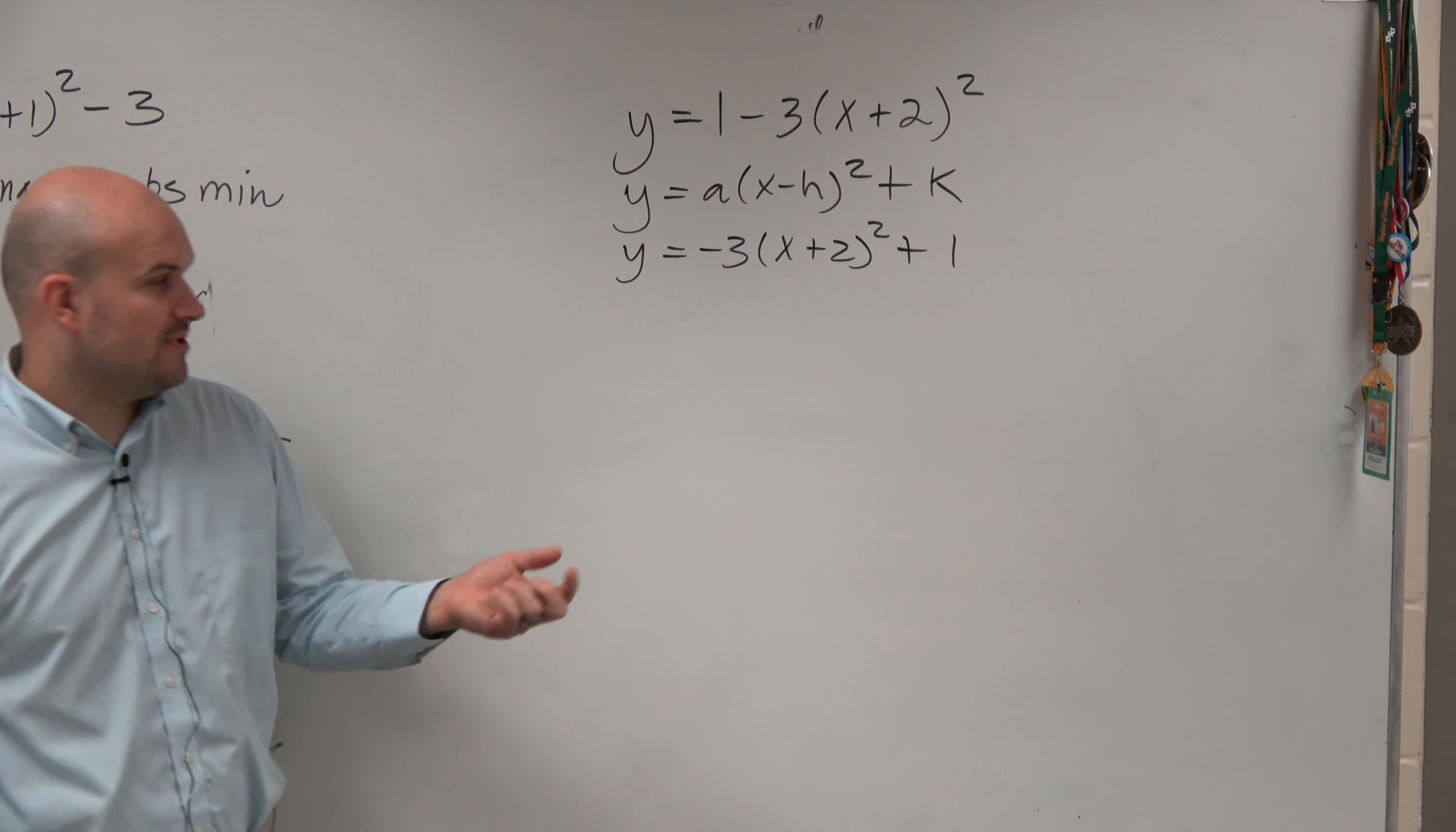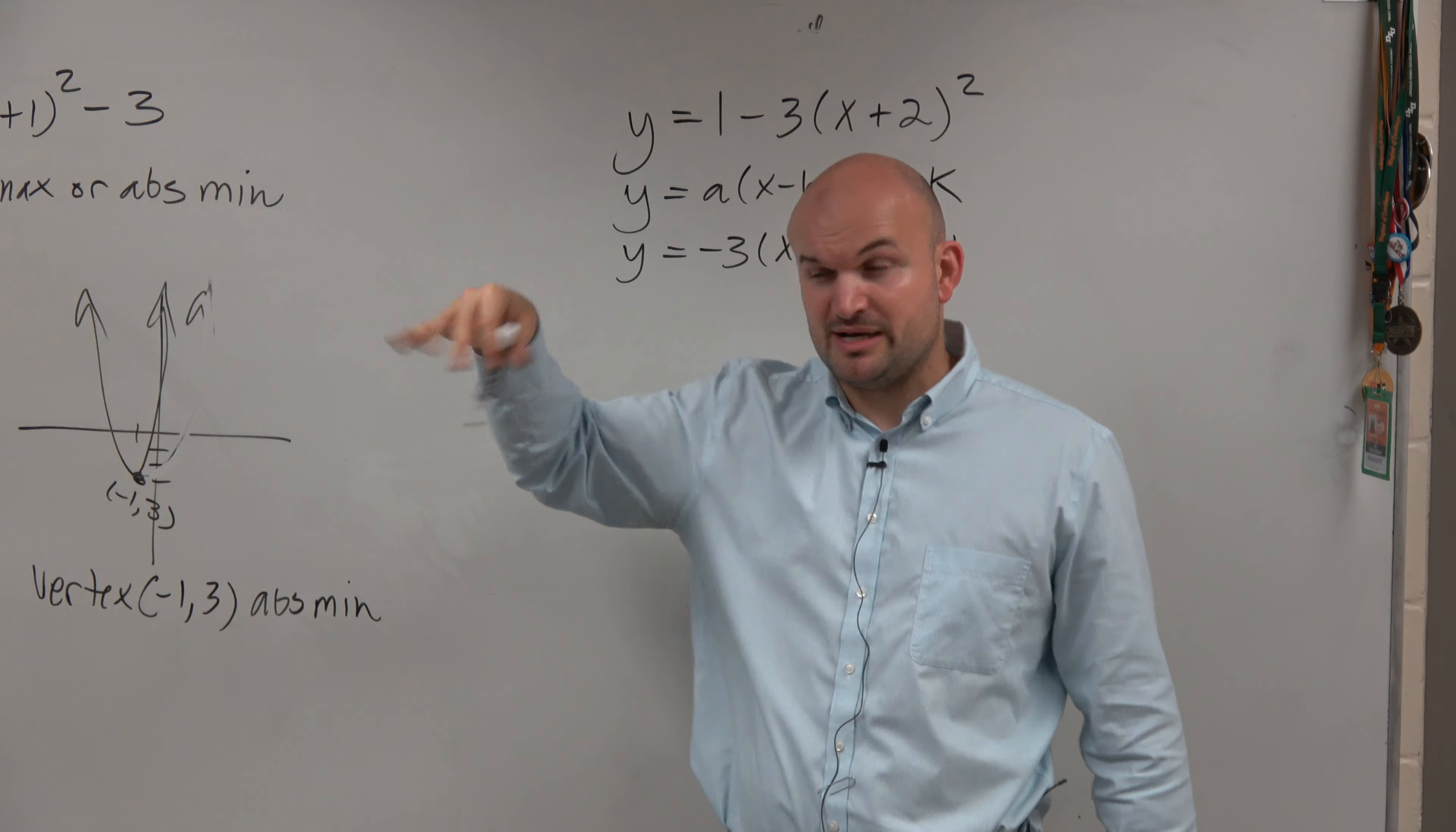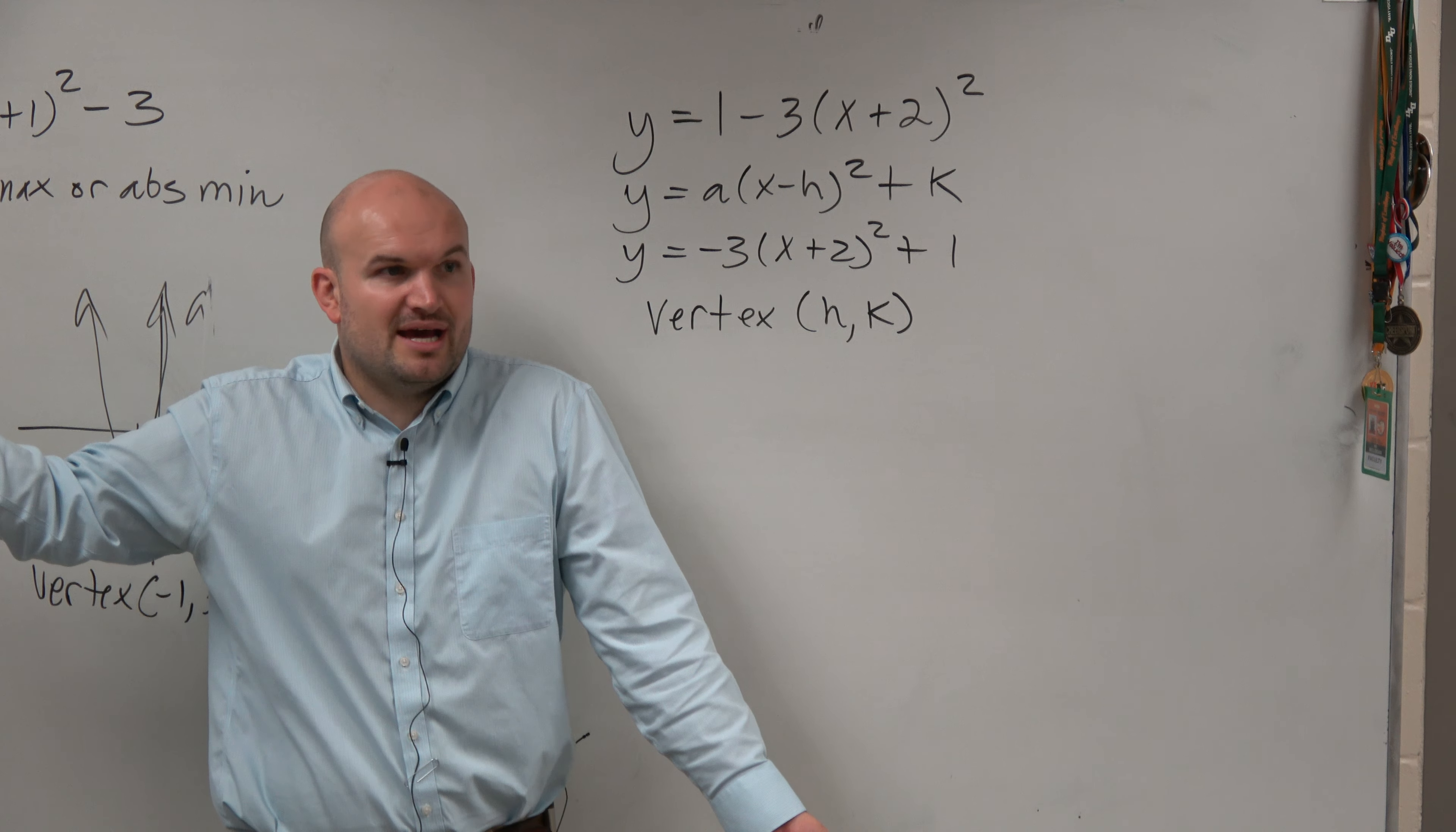Another way to look at this, rather than looking at what the transformations are, is to just identify what I want you guys to actually see over here. Do you notice that the vertex is basically in the equation? You can understand the transformation, but the vertex is really h comma k. That's all the vertex is. It's just h comma k.